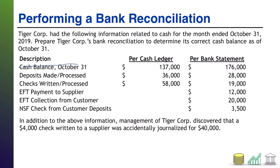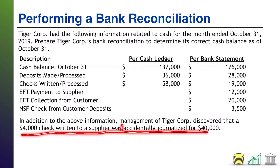I do encourage dealing with errors first because errors can sometimes affect the other information in the problem. In this case, the additional info says management of Tiger Corps discovered that a $4,000 check written to a supplier was accidentally journalized for $40,000. That word 'accidentally' indicates an error occurred.